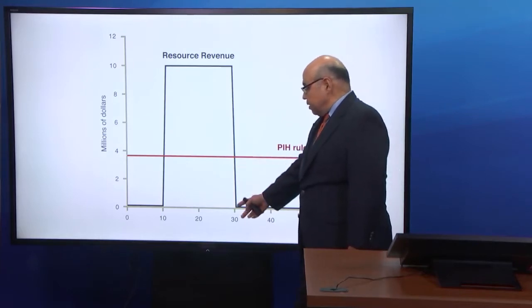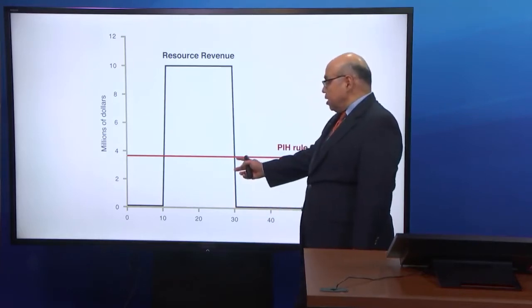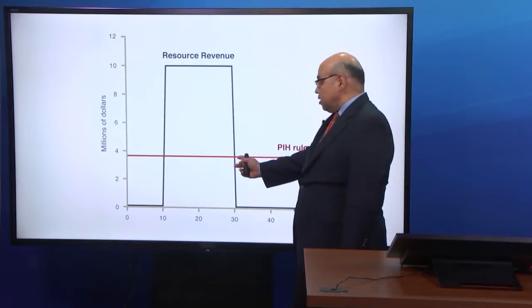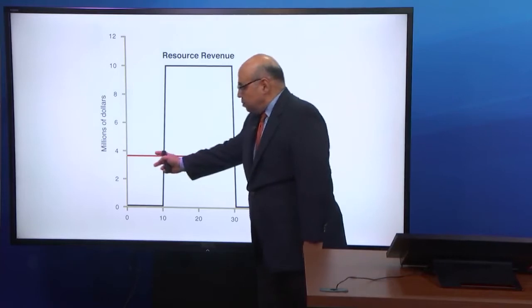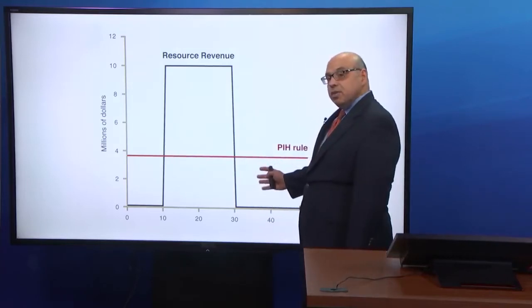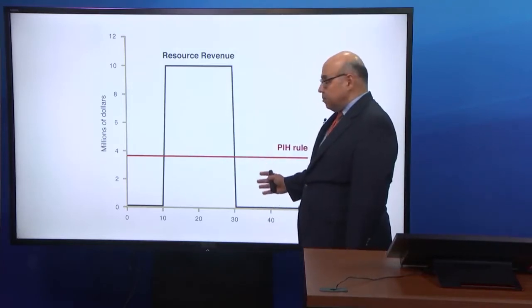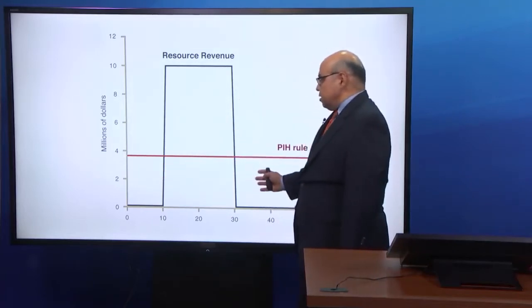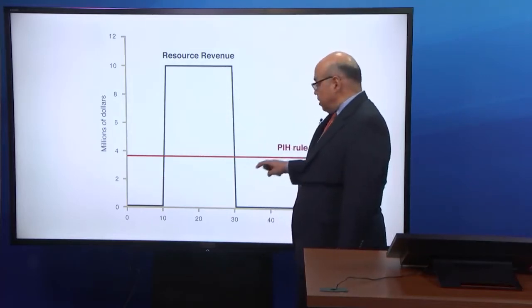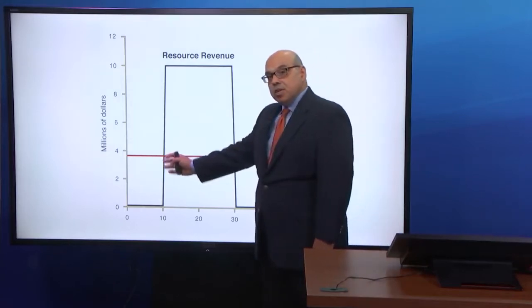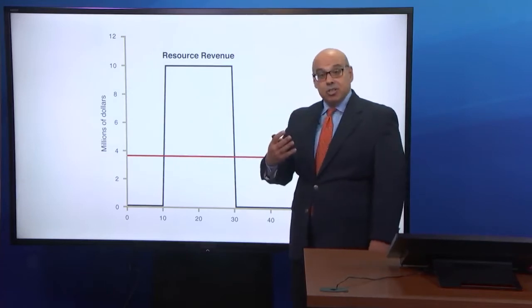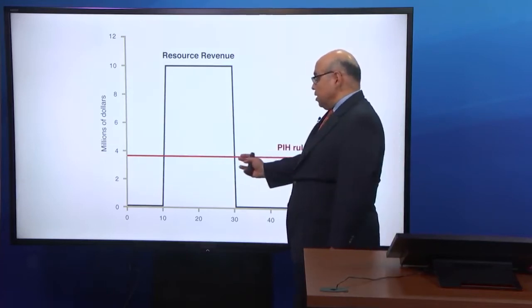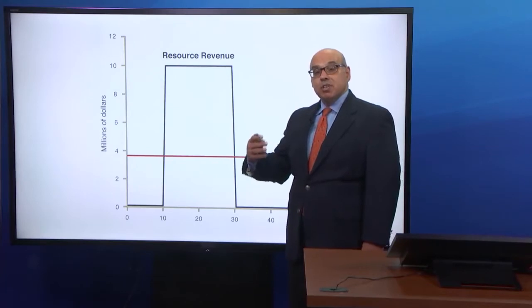As the resource revenue gets depleted, permanent income still maintains at this level. So that tells us that government spends this much, which is exactly the same line. So over this period, government is de-saving again. So de-saving, saving, and de-saving. By following this path, a smooth permanent income, government maintains a constant spending over time. And by construction, this smoothing and spending from the additional resource revenue is fiscally sustainable.